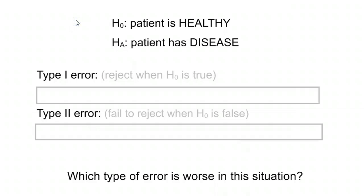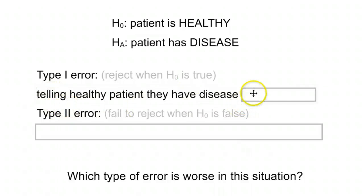Here's an interesting situation. A little different than the courtroom example. Let's say that the null hypothesis is that the patient is healthy. And the alternative is that the patient has some sort of disease. So, let's say you have some sort of medical test. And you're going to test, reject the null if they have a disease. A type 1 error, if you reject the null when the null is, in fact, true, that means you are telling someone who is healthy that they have a disease. Well, that's not a good thing to do.